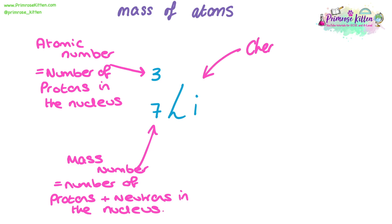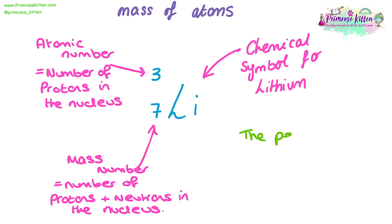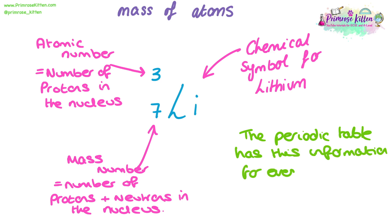Alongside these two numbers we also write the chemical symbol for that element — in this instance, the chemical symbol for lithium. The periodic table has all of this information for every known element: the atomic number, mass number, and the chemical symbol, and these are used universally. From this information we're able to determine the numbers of each subatomic particle — protons, neutrons, and electrons — for every element on the periodic table.